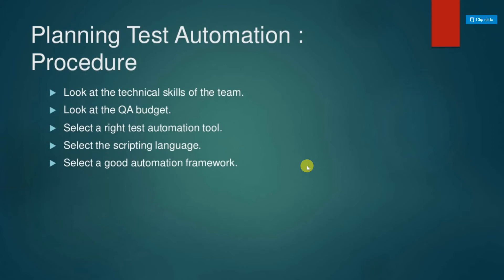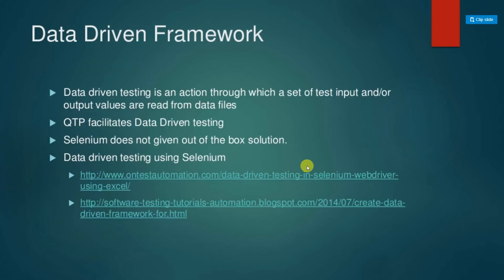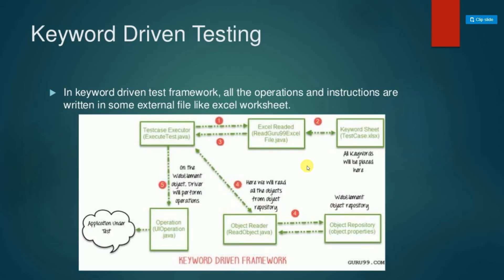Create a good automation framework with core components of configurability, extendability, scalability, reportability, and viability. For data-driven frameworks, we separate data from scripting logic — QTP facilitates data-driven testing with global and local data tables, while Selenium can use Apache POI to read data from Excel files, or use programming techniques in Java to read text files, CSV files, or databases. Keyword-driven frameworks use a set of keywords and values that are executed within the test automation framework.